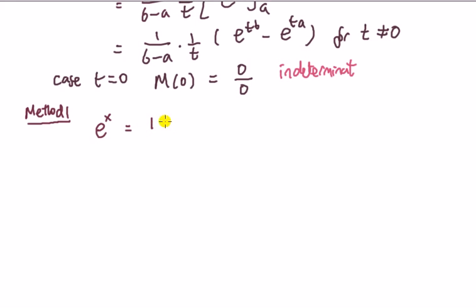Just recall that e to the x, if you use a Taylor expansion of e to the x, that's going to be one. I'm sure you've seen this at high school, plus x, plus x squared over two, plus x cubed over three factorial, and so on.